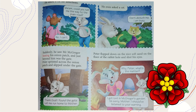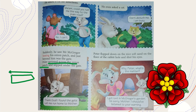Just beyond MacGranger was the gate. Peter sprinted — ran at an extremely fast speed — across the onion patch so that Mr. MacGranger wouldn't notice him, and then slipped under the gate. He said, 'Thank God I found the gate, let me run home to mother!'